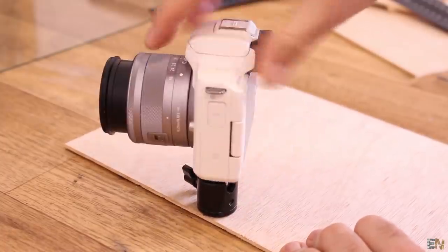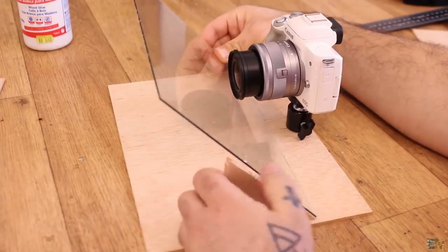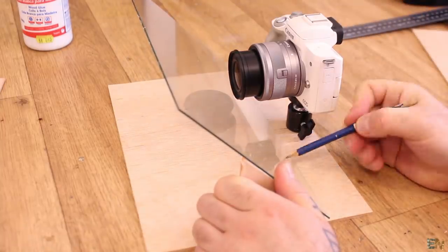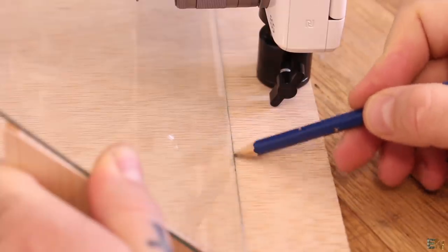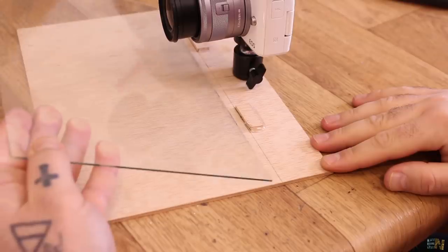Now with the camera in place, I measure more or less where to place the glass, so it will stay at 45 degrees without touching the camera lens. Then I mark the position on the wood. Now I glue in place two small pieces of wood that will be the stops for the glass.